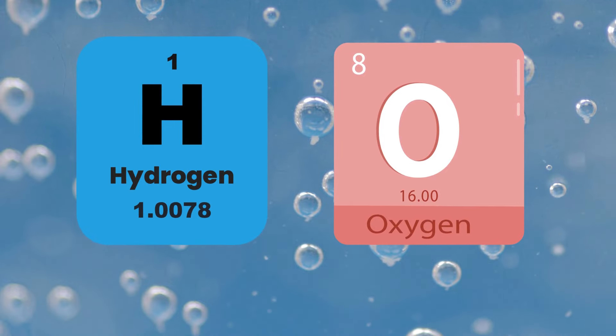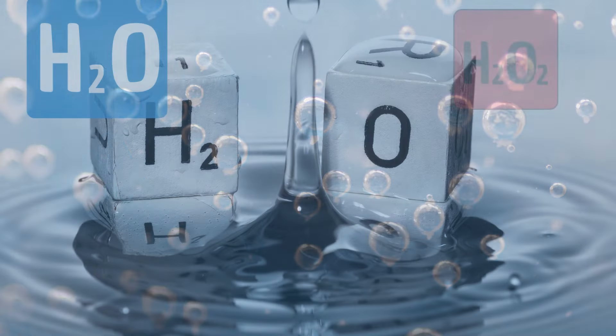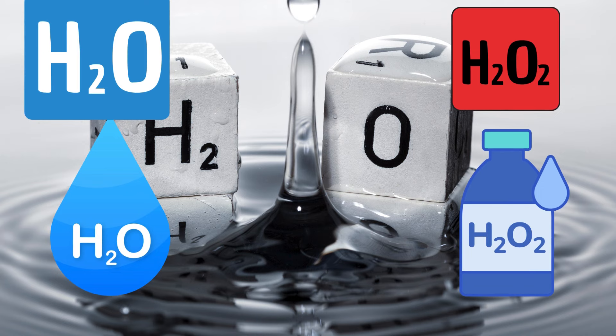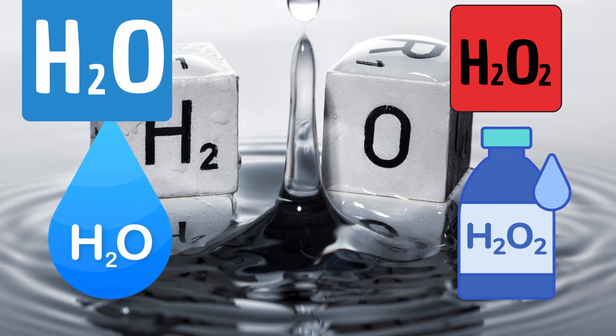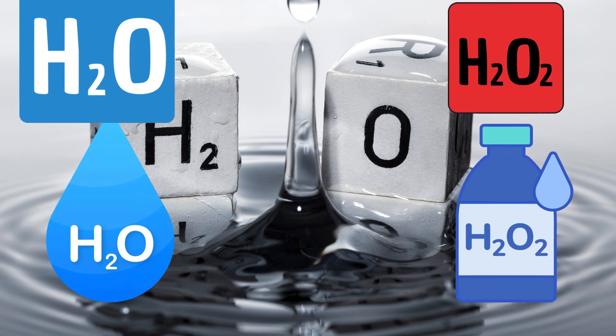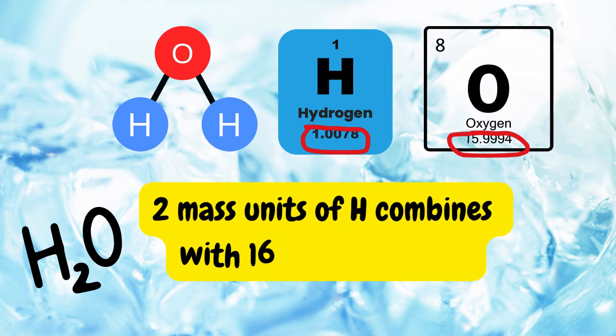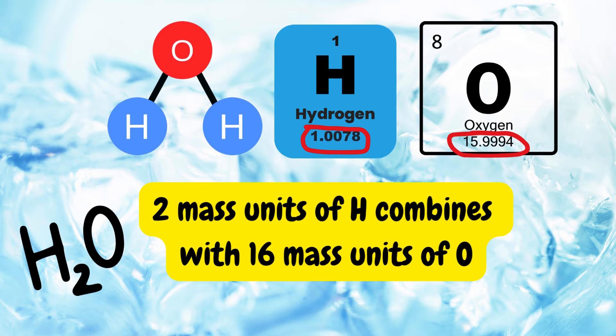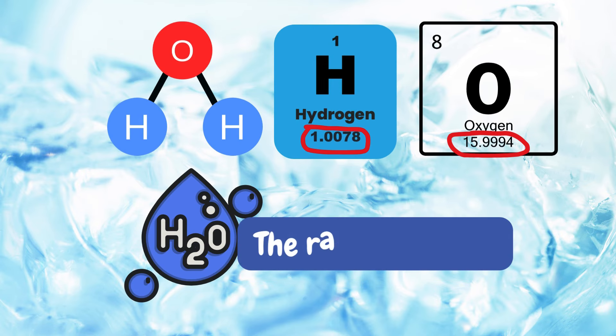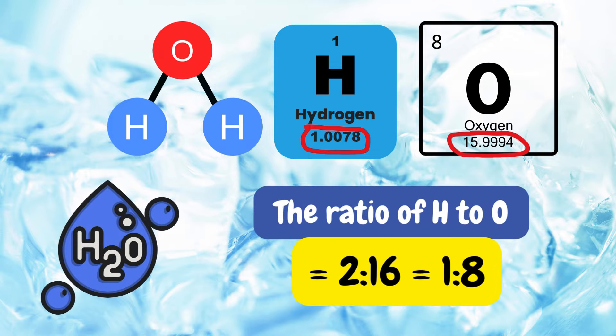An example illustrating this law involves hydrogen and oxygen forming two different compounds: water H2O and hydrogen peroxide H2O2. In water, let's say two units of hydrogen combine with 16 units of oxygen. The ratio of hydrogen to oxygen in H2O then would be 2 to 16, which equals 1 to 8.